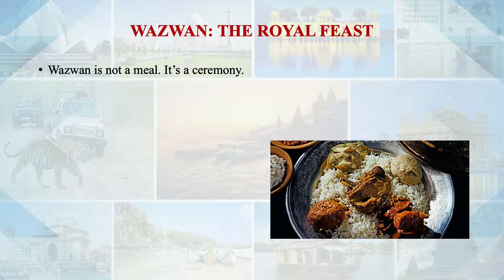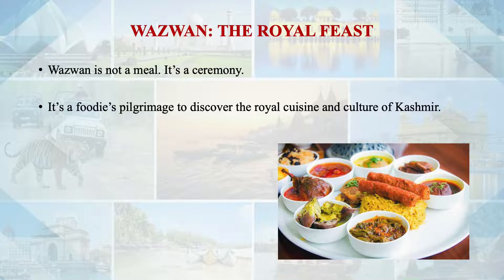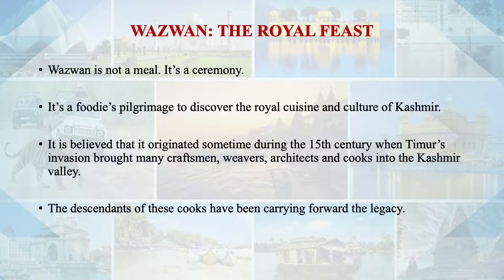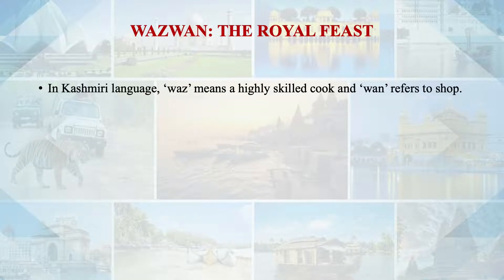Then we have the Vazwan tradition — a royal feast and ceremony. Vazwan is a foodie pilgrimage to discover the royal cuisine and culture of Kashmir. It is believed to have originated during the 15th century when Taibur invaded and brought many craftsmen, architects and cooks into the Kashmir valley. The descendants of these cooks have carried forward the legacy. In Kashmiri language, Vaz means highly skilled cook and Vazwan refers to a shop.